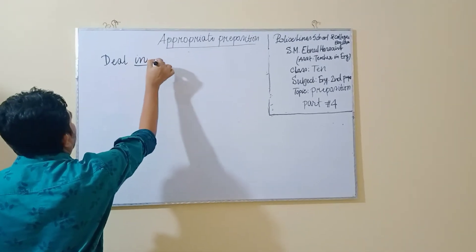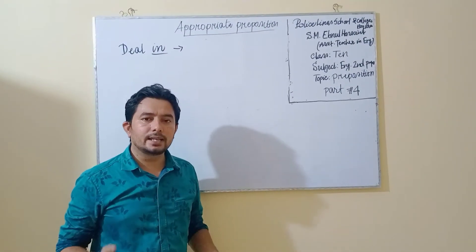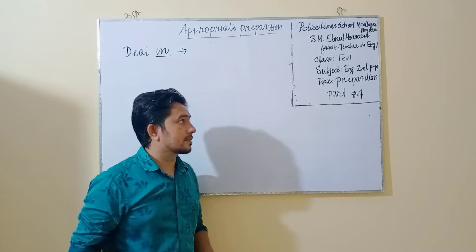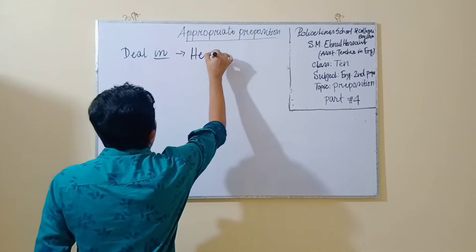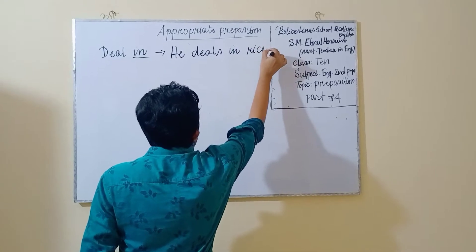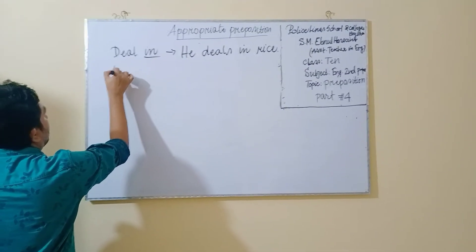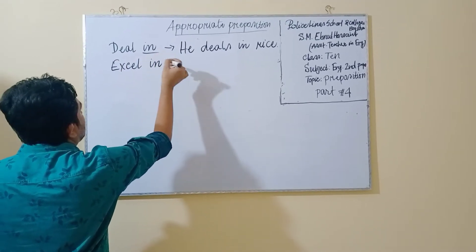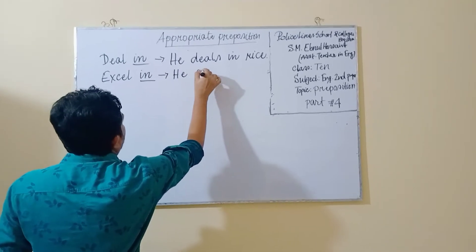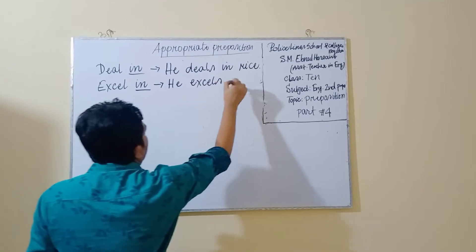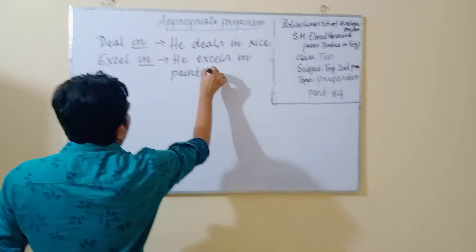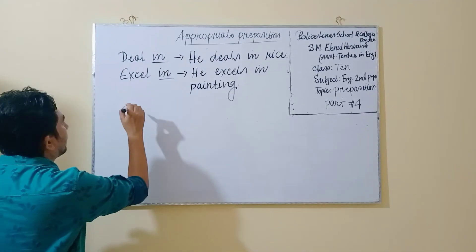The word 'deal' is followed by the preposition 'in', and that means to run a business or to do a business. For example: He deals in rice. The word 'excels' is followed by the preposition 'in'. For example: He excels in painting.